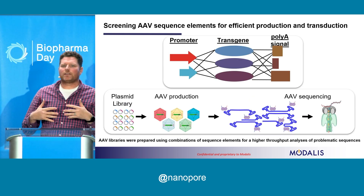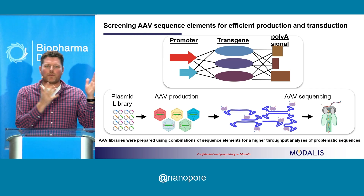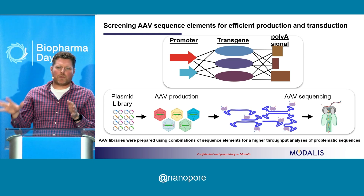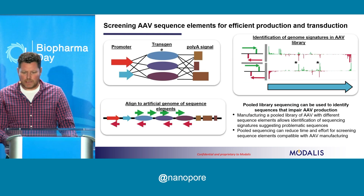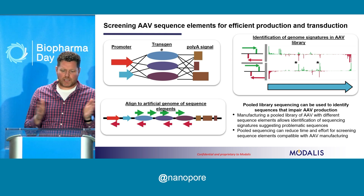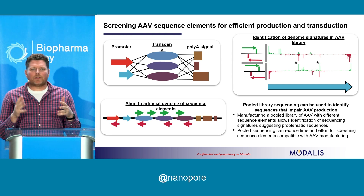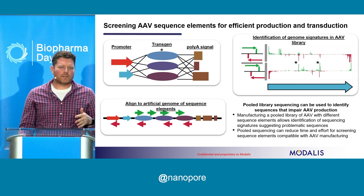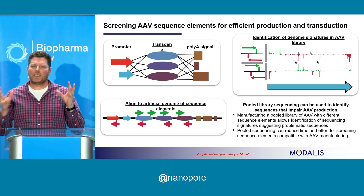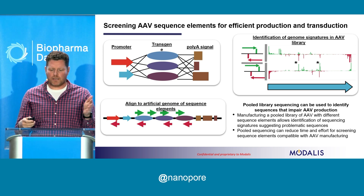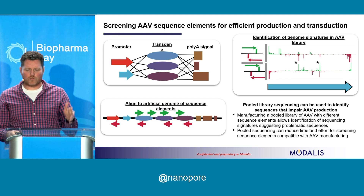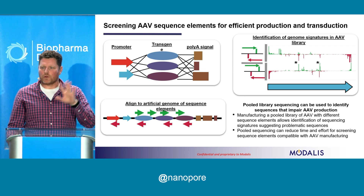We were excited that there seemed to be a signature where we could identify these problematic sequences. So we took all possible combinations of sequence elements we might want to put into an AAV vector, made a plasmid library, produced an AAV pool, and did the same sequencing described earlier. We performed alignment against an artificial genome containing all of those sequences. We were able to identify these signatures in the promoter in pooled format. Now when we start a project, we just think about all the promoters and sequences we might want to include, clone them, and do sequencing in a pooled format. This is super cost-effective and allows us to test potentially problematic sequences at a very early stage in the program.